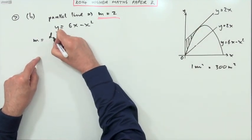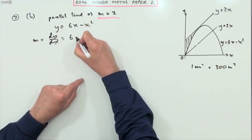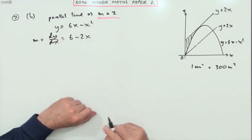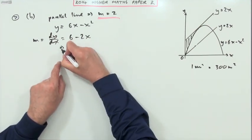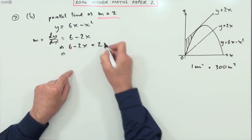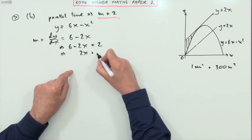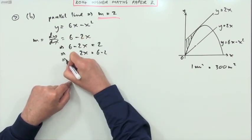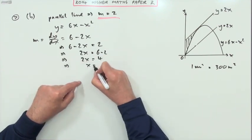And then I can say, since the gradient's 2, I can say that this should equal 2. So this means that 6 minus 2x should equal 2. Take that over to that side, so 2x equals 6 minus 2. 2x equals 4, which means x equals 2.